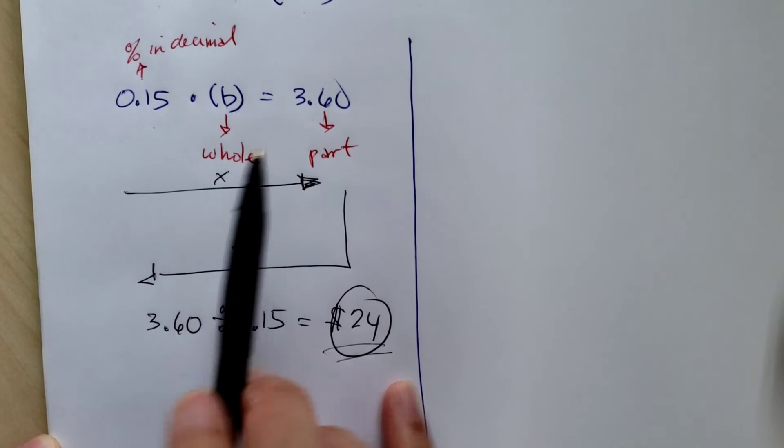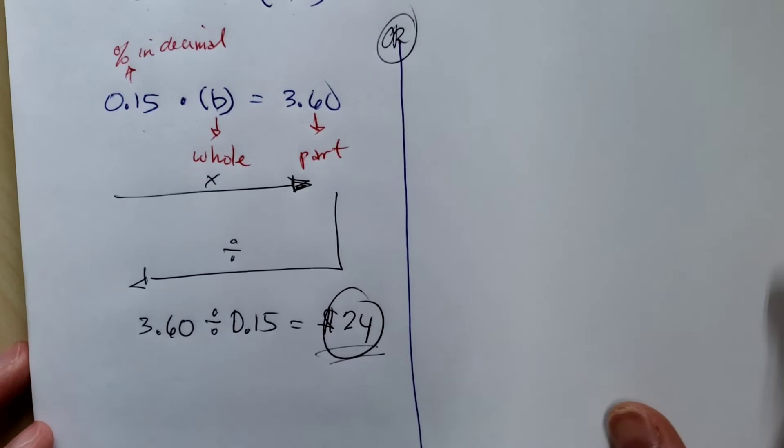So the bill is $24. Because 15% of 24, if you use your calculator, will give you $3.60.